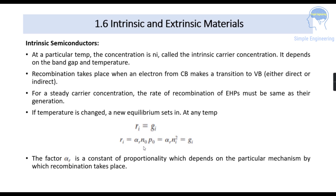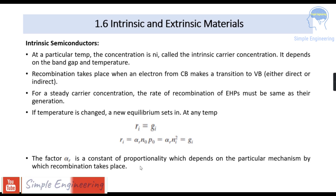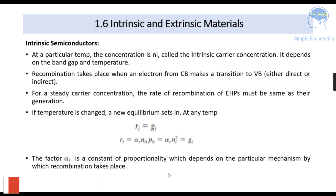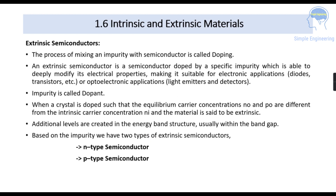If the temperature is changed, a new equilibrium is set, and at any temperature Ri, the recombination rate, is equal to Gi, the generation rate. Ri equals alpha-R times N0 times P0, which equals alpha-R times Ni squared — where N0 and P0 are the electron and hole concentrations equal to the intrinsic carrier concentration. Ni squared equals Gi, meaning the recombination rate equals the generation rate. The factor alpha-R is a constant of proportionality which depends on the particular mechanism by which recombination takes place.